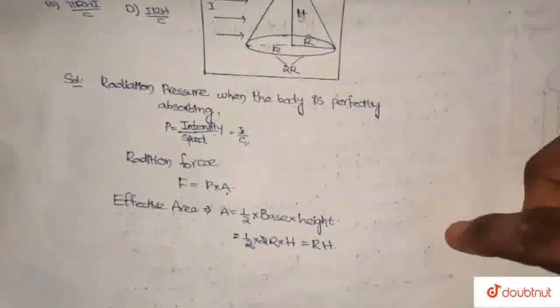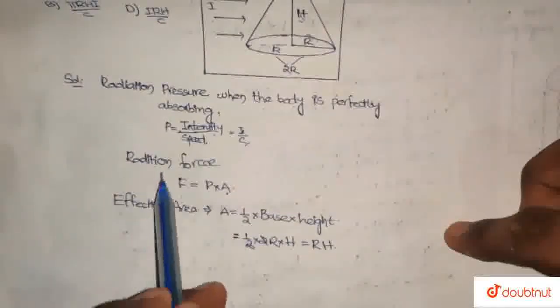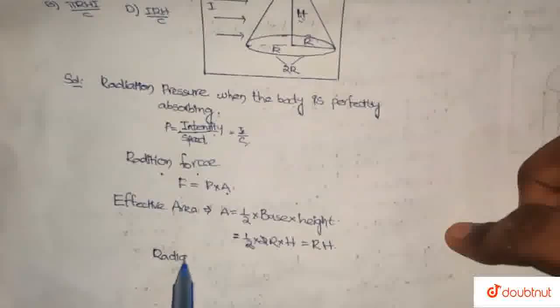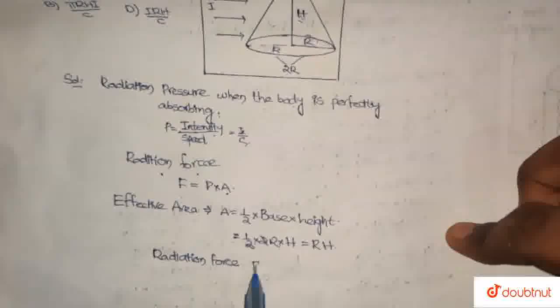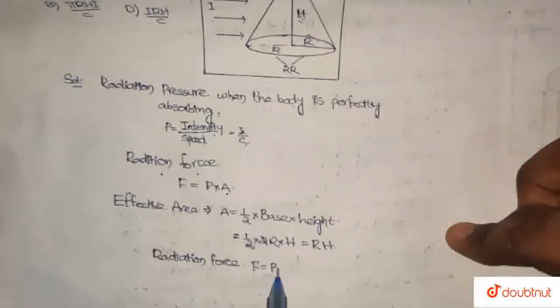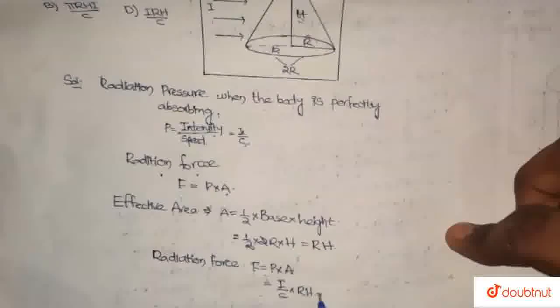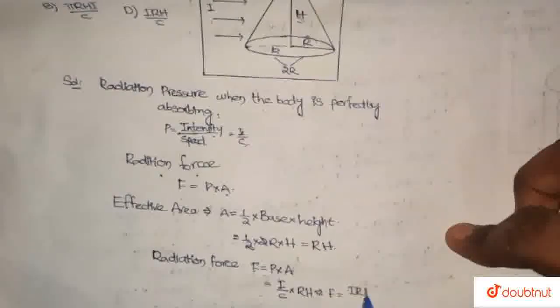So to calculate radiation force, F equals radiation pressure into effective area. F equals pressure I by C into area RH. So radiation force equals IRH by C.